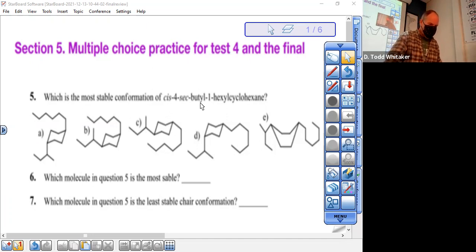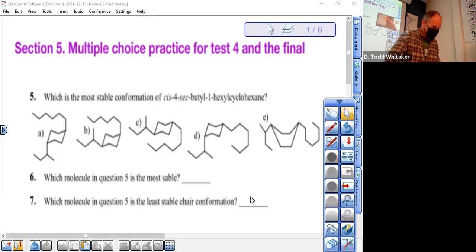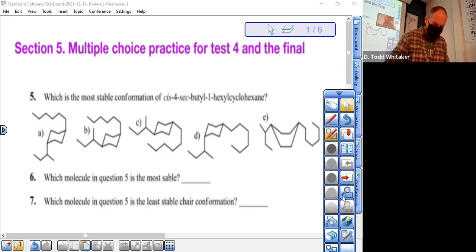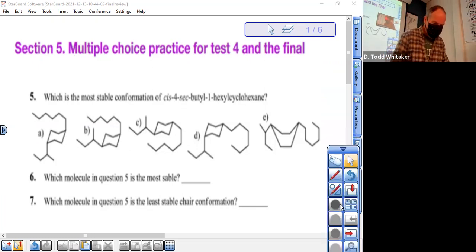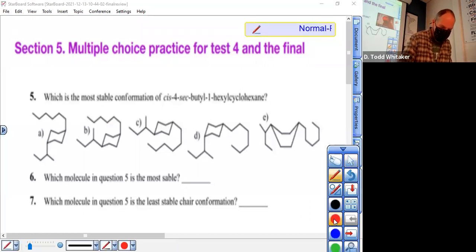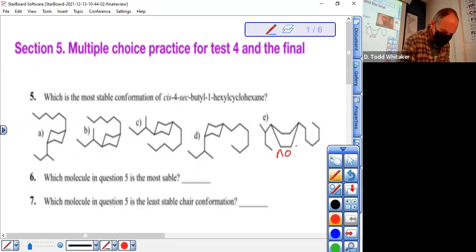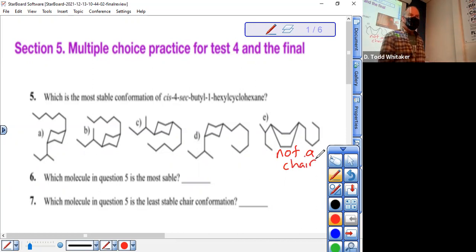Looking at cis-4-sec-butyl-1-hexyl-cyclohexane, you got to make sure we're talking about the right molecules. They all have groups on one and four, but one of them's not a chair at all.